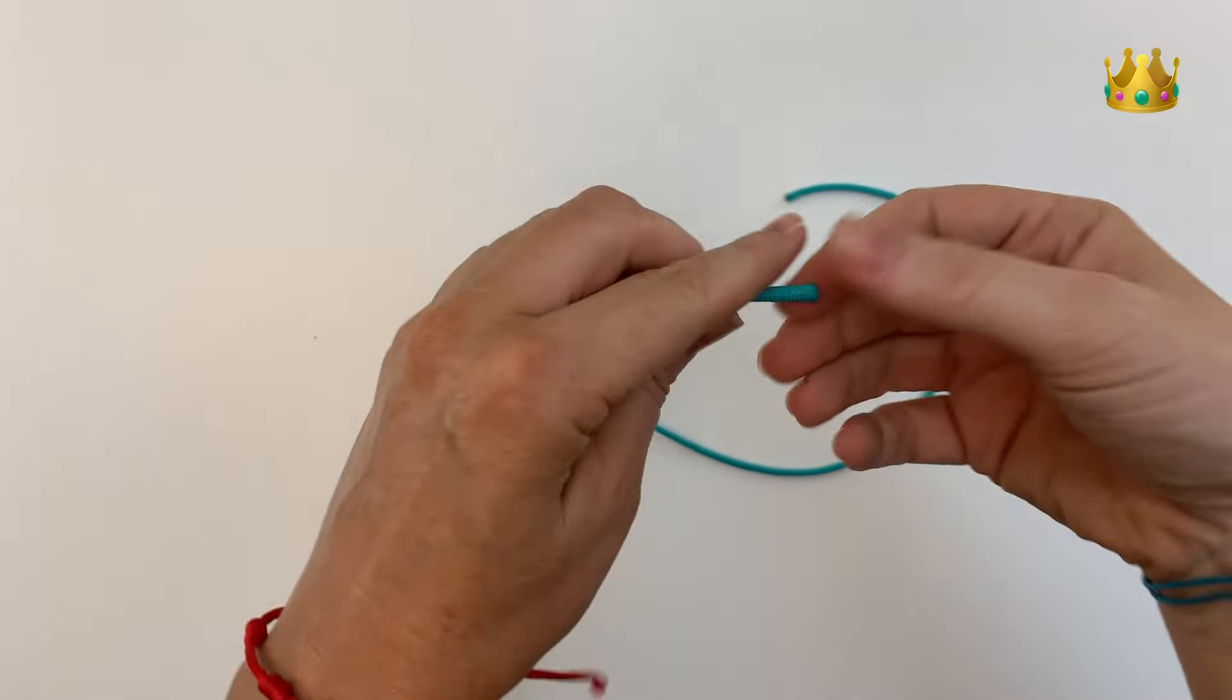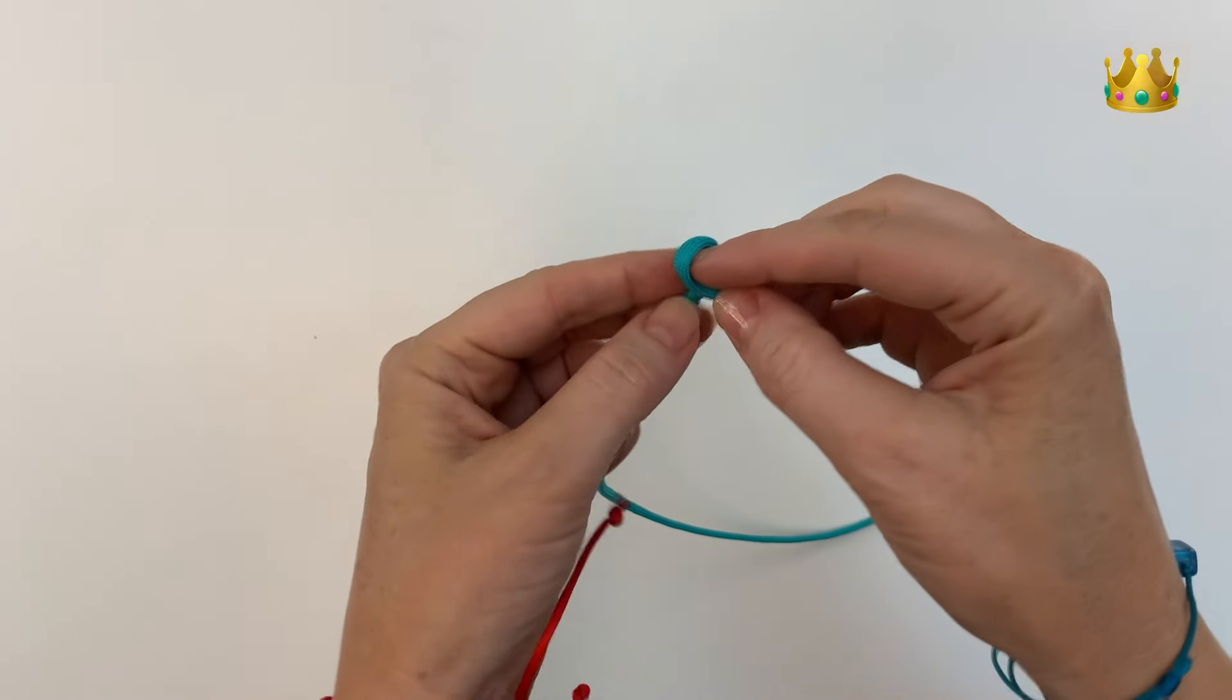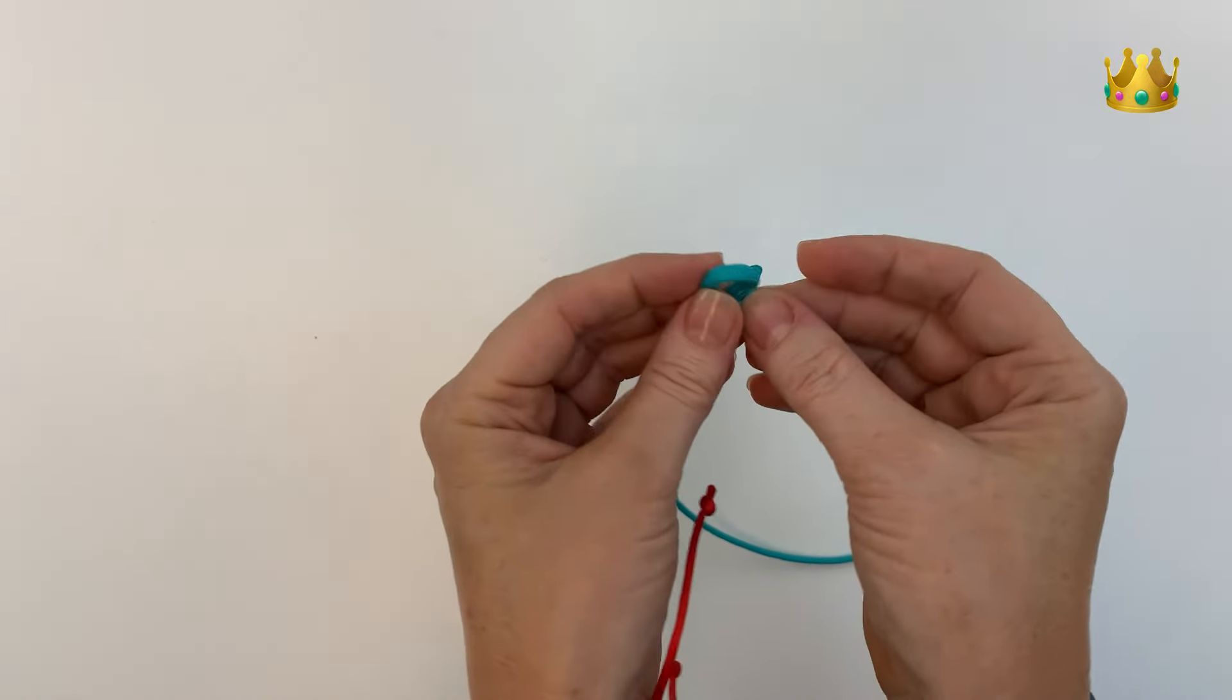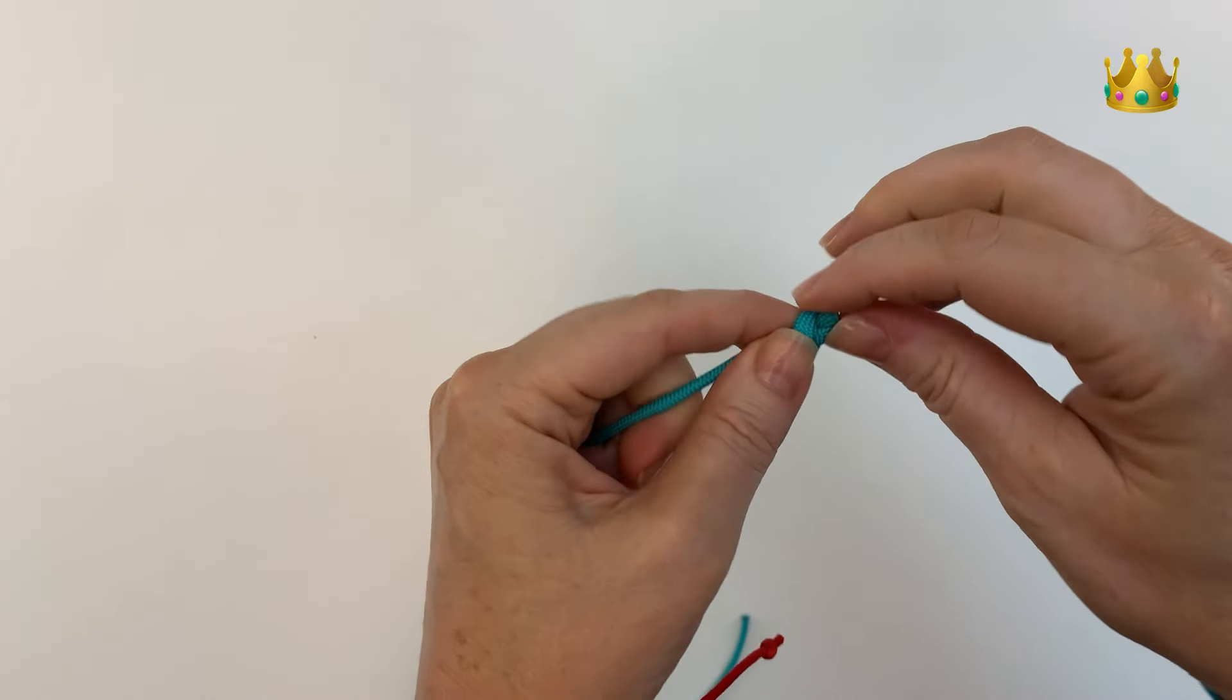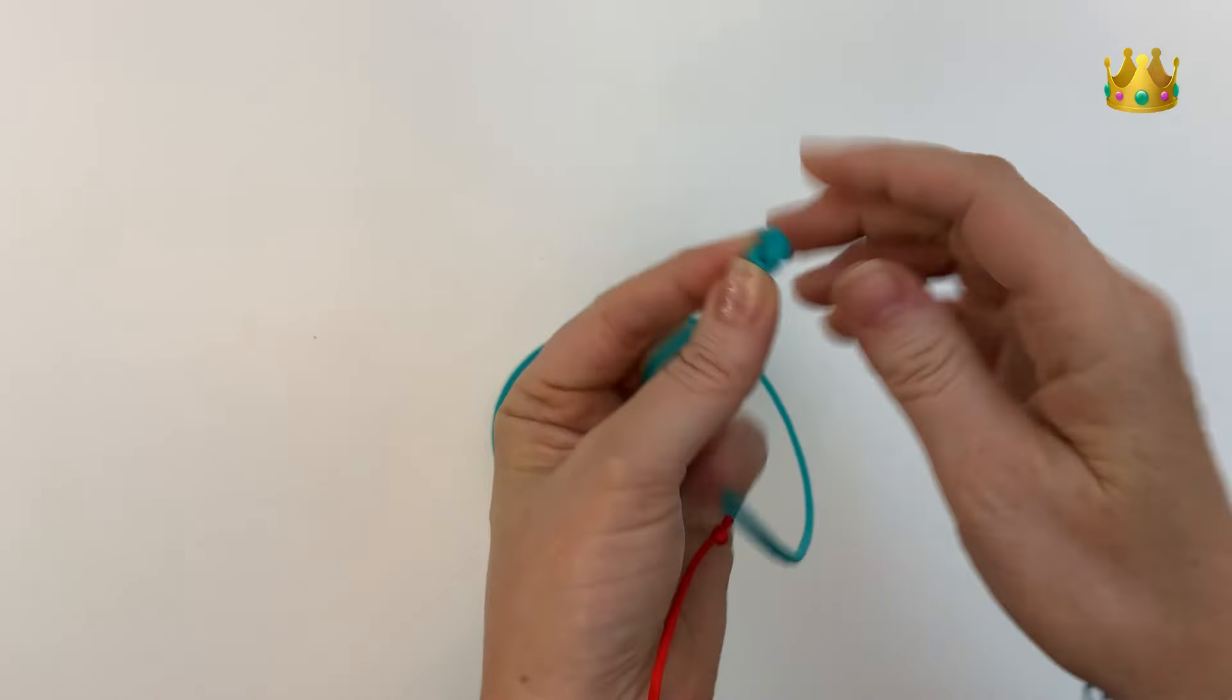First, on the end of our length of paracord, we tie a simple overhand knot. Bring it around to form a loop, then bring the end through the loop, pulling it down tight onto the end of the cord.